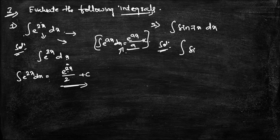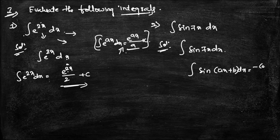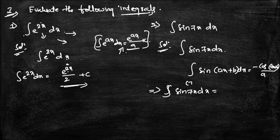Second question: integral of sin(7x) dx. The formula we use is: integral of sin(ax + b) dx = −cos(ax + b)/a + C. So the answer here is −cos(7x)/7 + C.